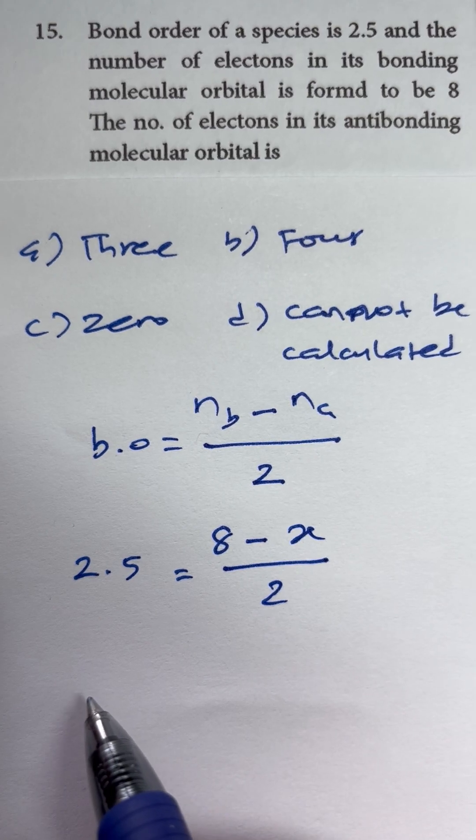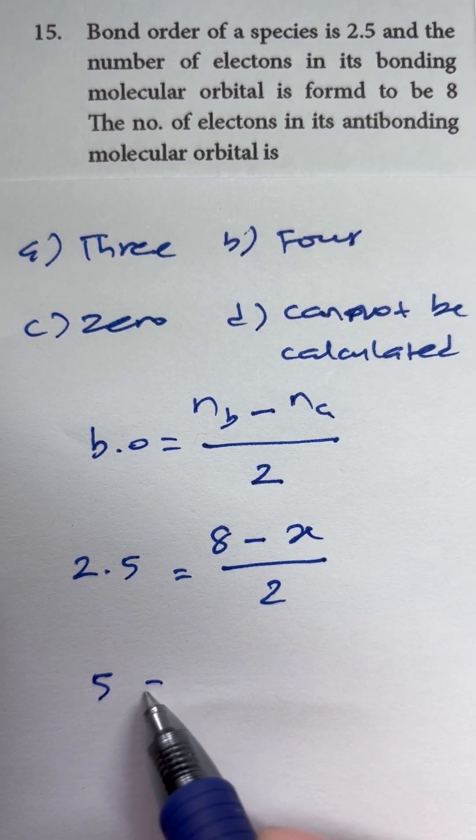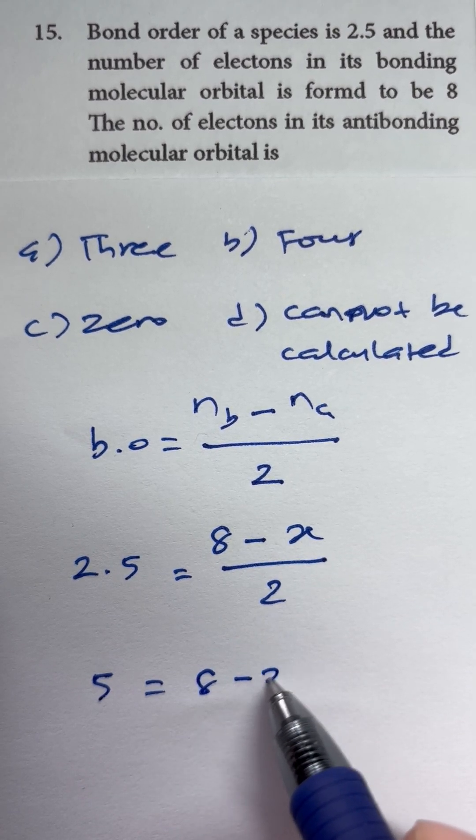If we multiply the entire equation by 2 on both sides, then we will get 5 equals 8 minus x.